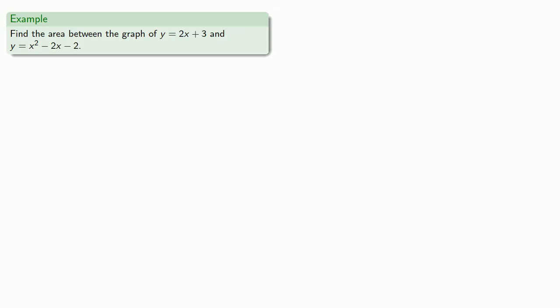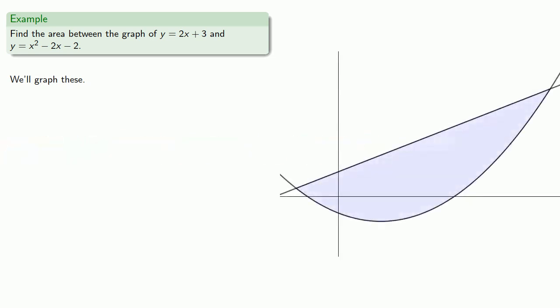What happens if one of our boundary curves is not the x-axis? For example, suppose we want to find the area between the graph of y equals 2x plus 3 and y equals x squared minus 2x minus 2. We begin by graphing these two curves. We see we have a top — the line — and a bottom — the parabola. The left and right bounds are determined by the intersection points.